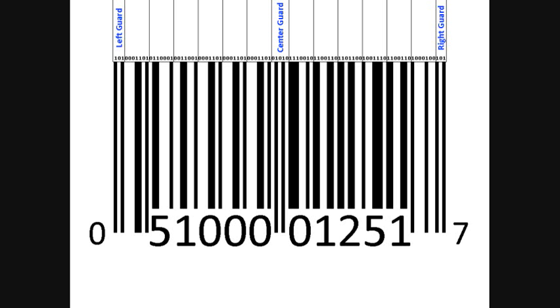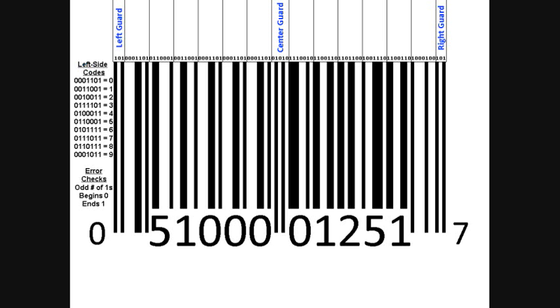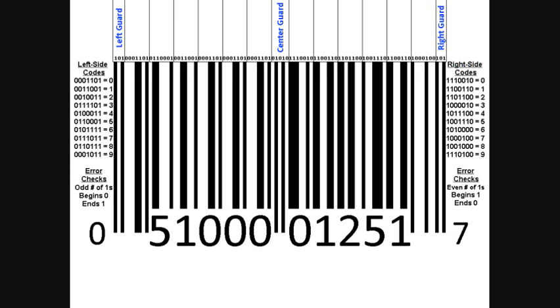These guards let the computer know where the barcode begins and ends, and also where the six numbers on each side begin and end. This is important because the numbers on the left are identified based upon one set of codes, and the numbers on the right are identified based upon another set of codes.